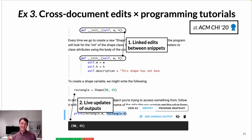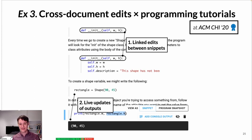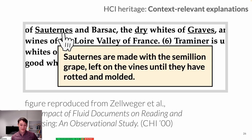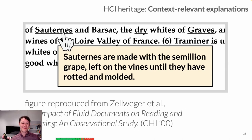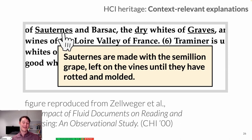Of course, in exploring these IDEs for ideas — these power tools for reading and authoring complex documents — we're certainly not the first. There's a really rich tradition within HCI of exploring these different types of affordances. Here's a figure I reproduced from a CHI 2000 paper out of Xerox PARC for a vision called Fluid Documents. One of the visions of Fluid Documents was that you would be able to underline terms that people might not understand — for instance, an obscure type of grape used in the winemaking process — and then someone could click on that and see definitions appear as tooltips or in the margins or between the lines.